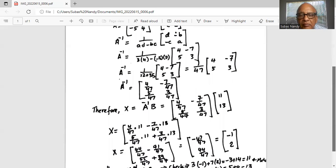Applying the rules of multiplication, we multiply the first row of A inverse with the column of matrix B. So it's 4 over 47 times 11 minus 7 over 47 times 13. This is the first row, first column.